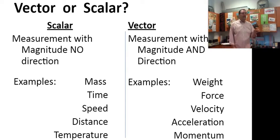Weight has one. It's down. Any force has one. Weight is an example of a force. Velocity, by our definition, has one. But speed does not. And acceleration has it. But distance and temperature don't. Momentum has it by our definition. But mass and time do not.